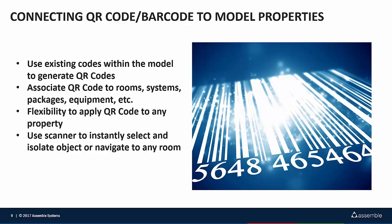We gave flexibility to associate those codes to your rooms, your systems, or any property within the model. With those properties you can then use the scanner to dial right back into it, so that walking through the project you can use a code to jump into a location or associate to a system or a particular air handler, VAV box, or anything like that. You have the ability to pick whether you're using a property from the model, an Assemble property, or otherwise.